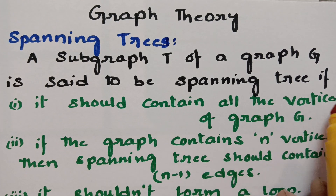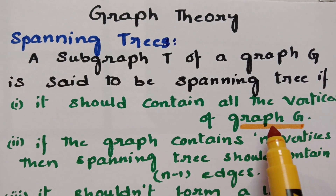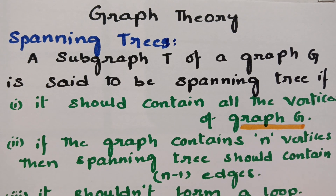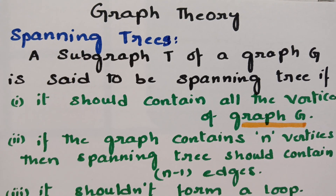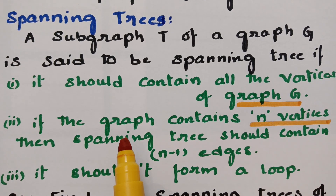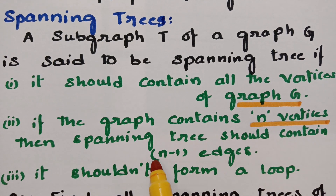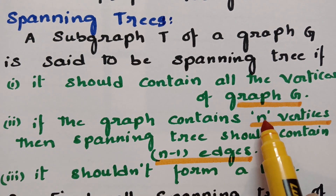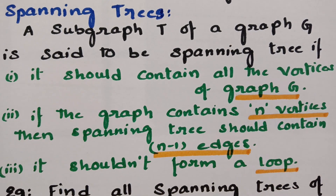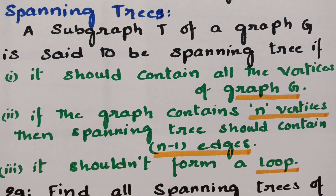First, it should contain all the vertices of the graph G — so if graph G contains four vertices, the spanning tree also should contain four vertices. Second, if the main graph contains n vertices, then the spanning tree should contain n minus one edges. Third, it should not form any loops, circuits, or cycles. If all three properties hold, then the subgraph is called a spanning tree.